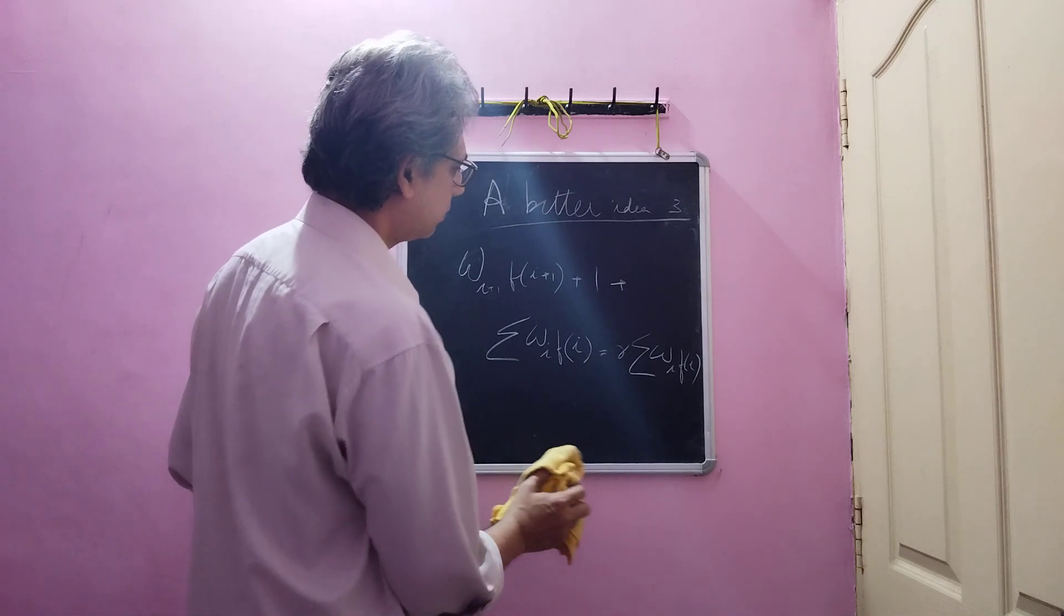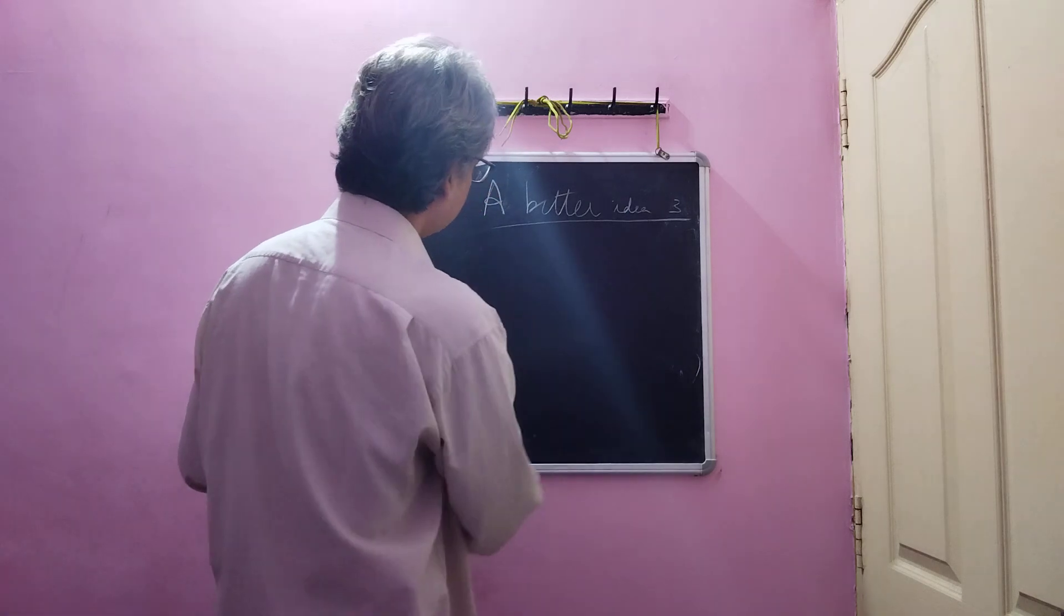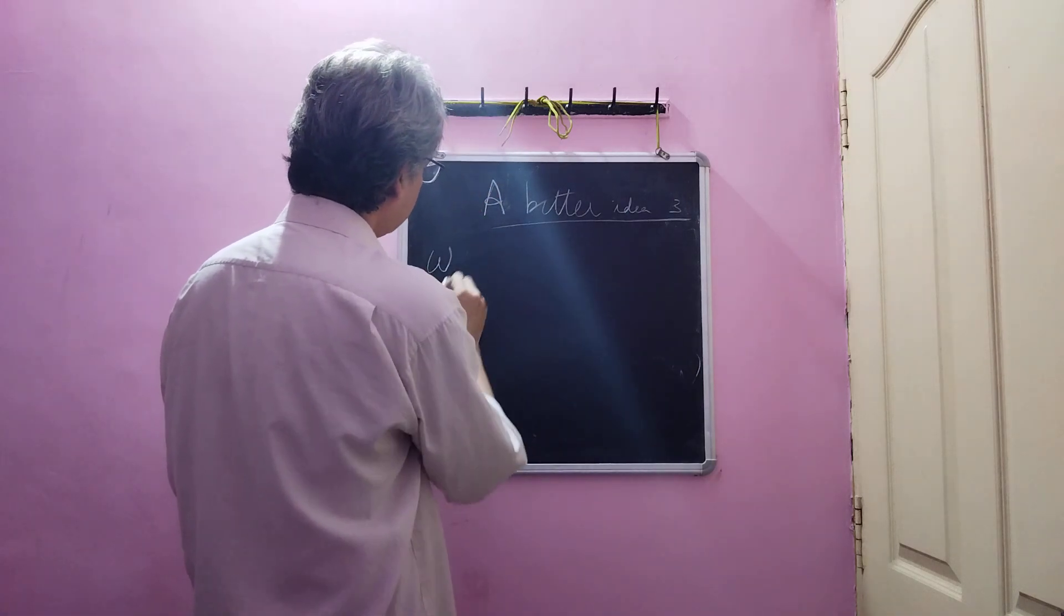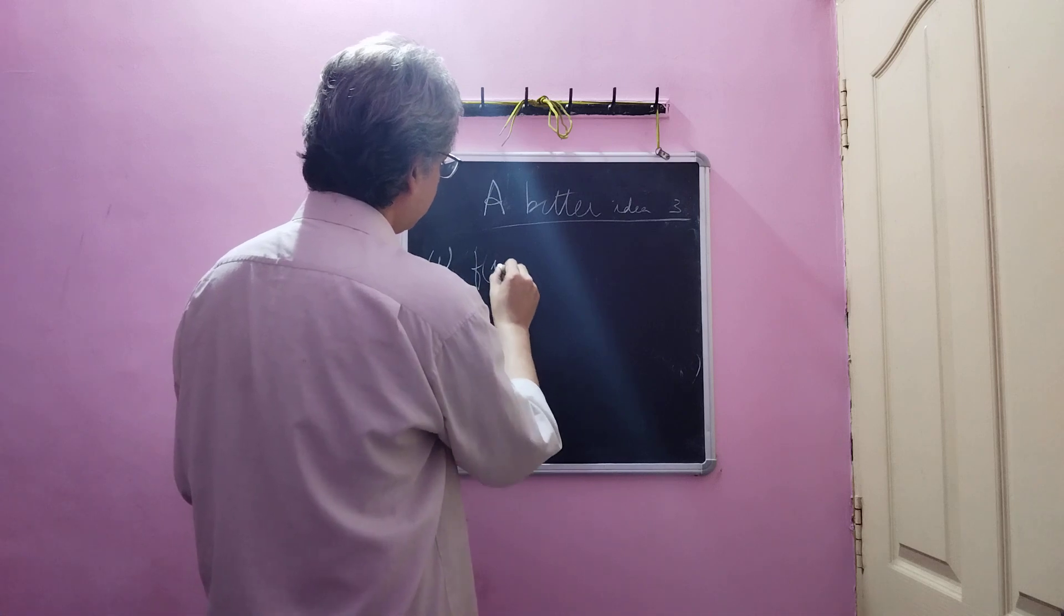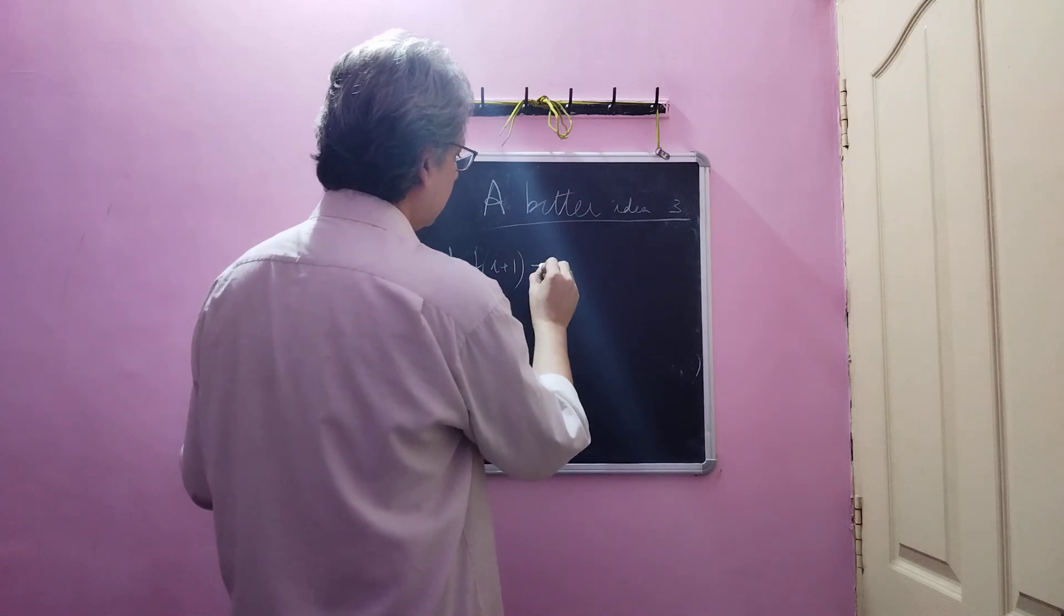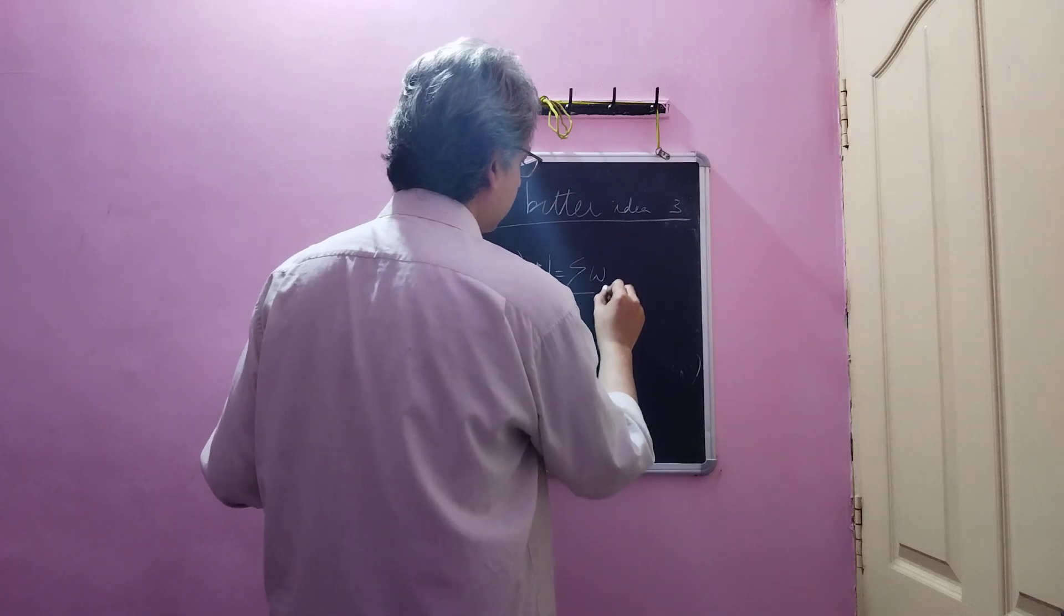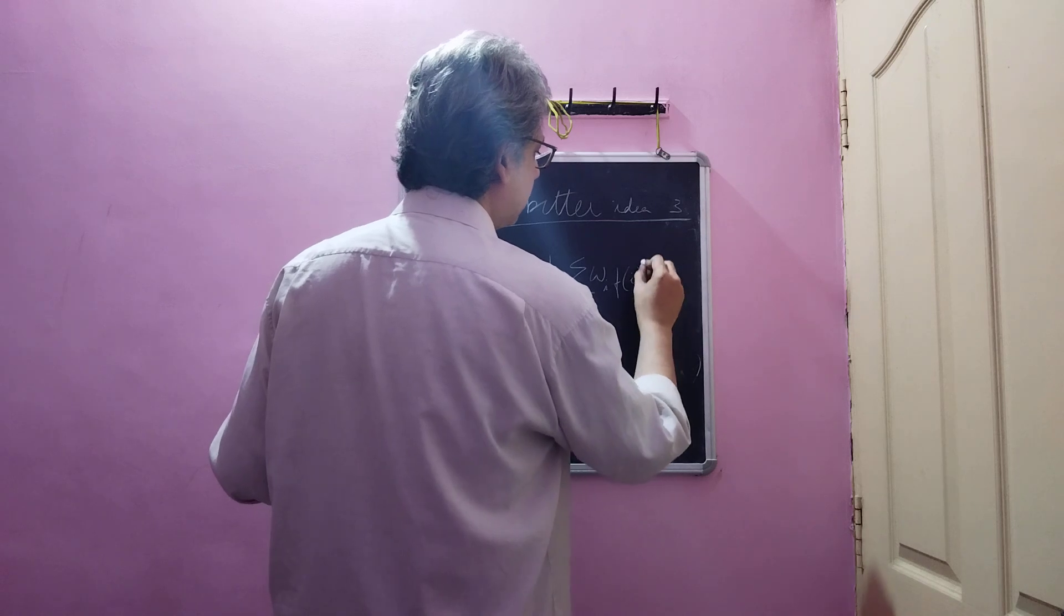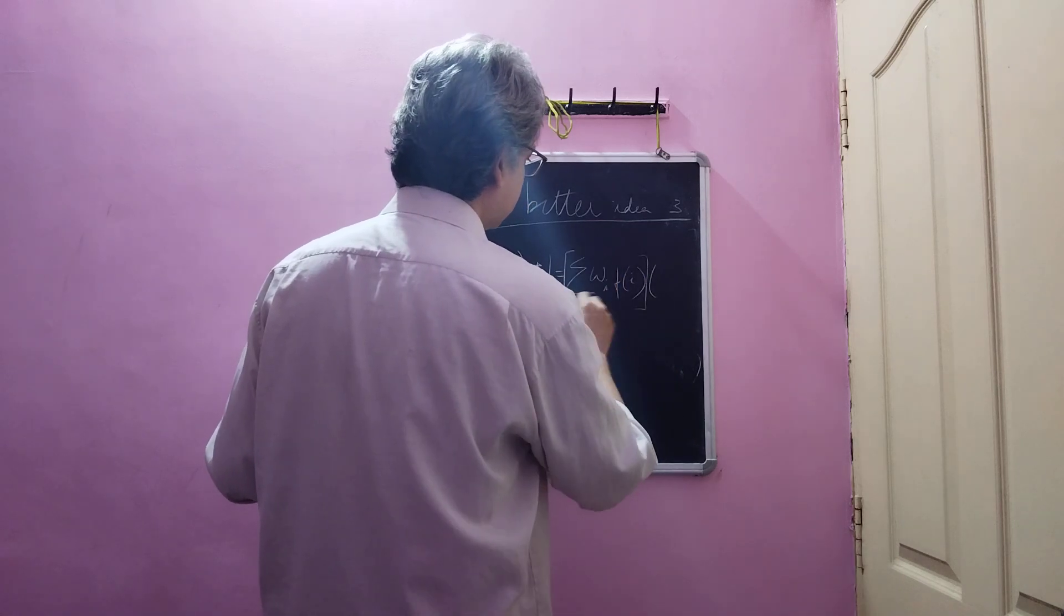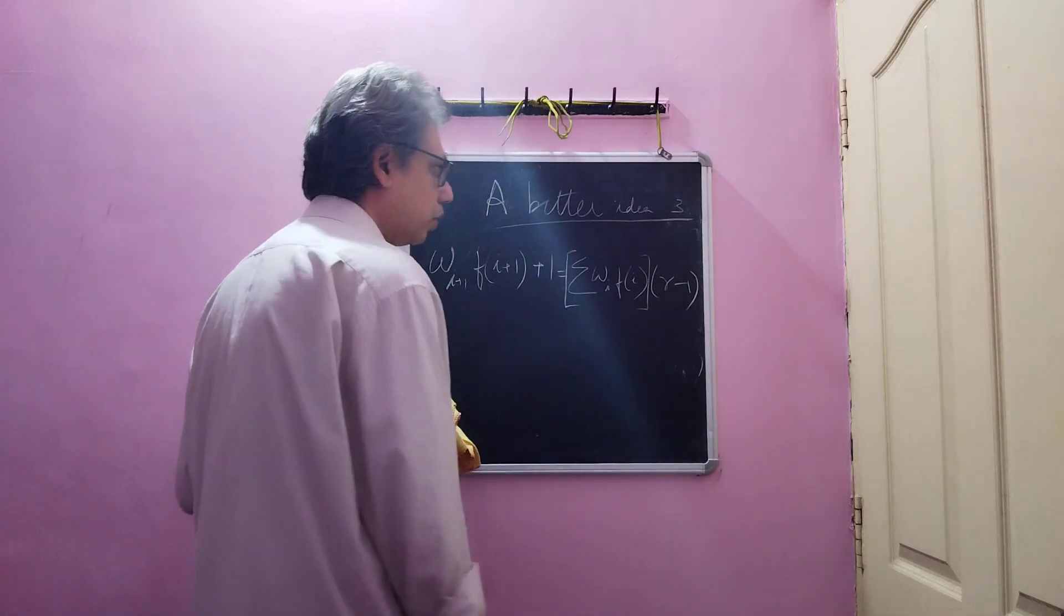So this means wi plus one times f of i plus 1 plus 1 plus 1 must be equal to summation wi times f of i equal to two. This will be the summation times r minus 1.